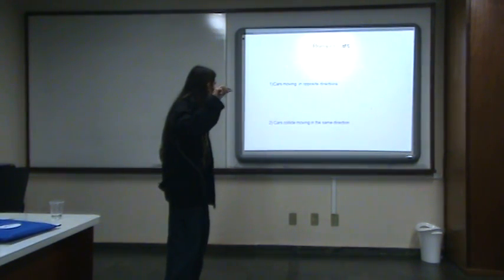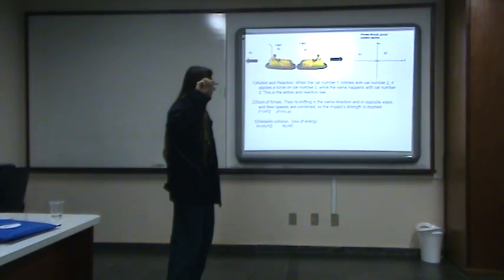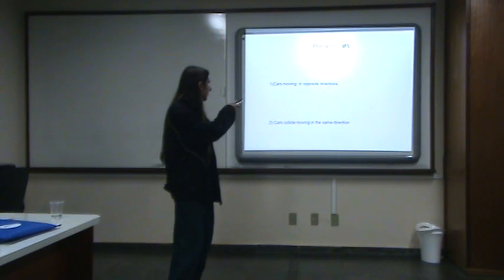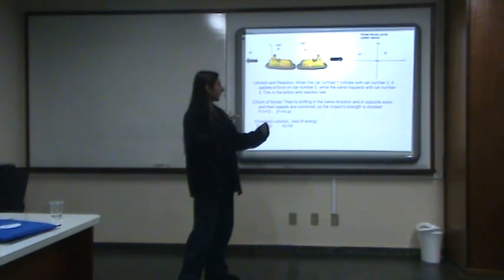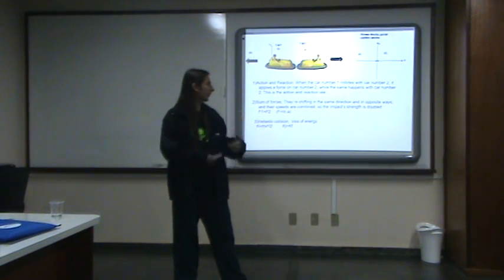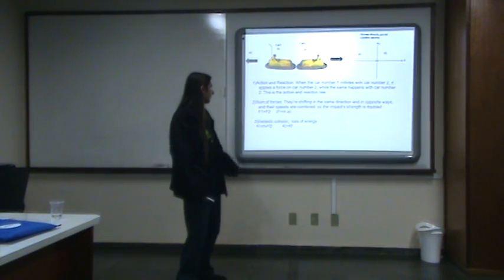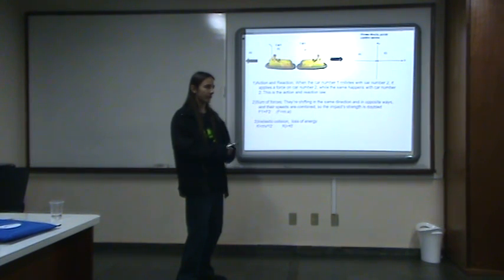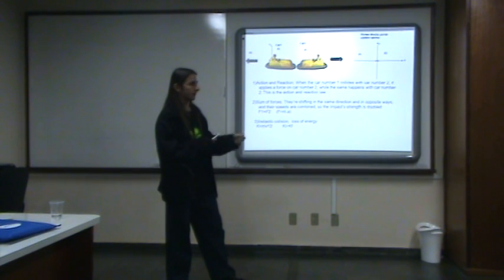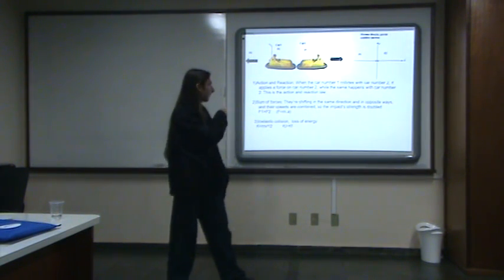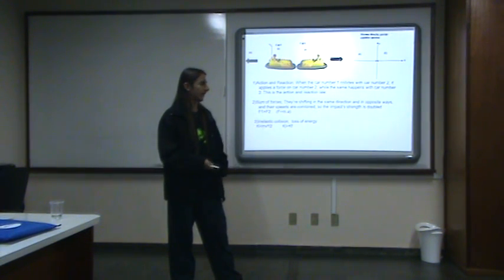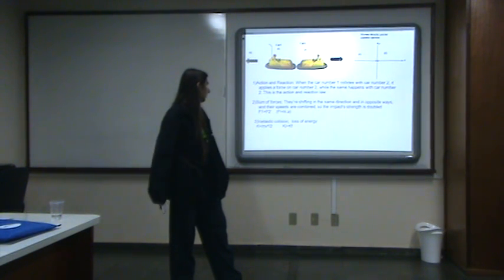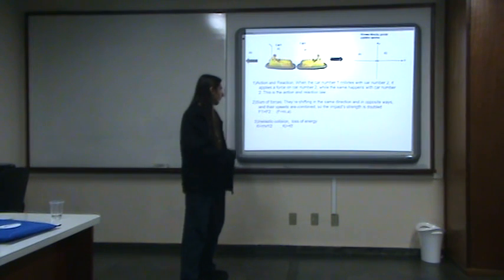Cars moving in the same direction. Here we have two cars going in exactly the same direction. They will collide, and then we can see three things. The action and reaction. Car number one applies a force to car number two, and car number two also applies a force on car number one. Then, the forces of collision get doubled. We have the sum of forces, as I told you. And this is just the formula to calculate it.